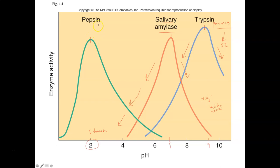Pepsin is also a protein-digesting enzyme, produced in the stomach. Its pH optimum is around pH 2, because the stomach has gastric juices containing hydrochloric acid, making it acidic. If the pH changes away from the optimum, enzymatic activity will decrease. When enzymes are outside their normal pH range, denaturation can take place just like with temperature. It's very important to have the right temperature and the right pH.